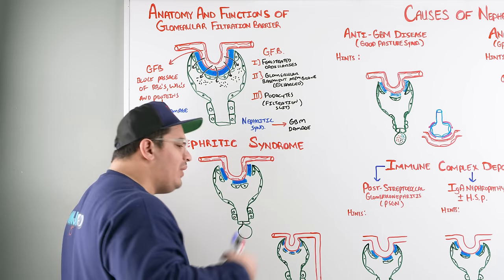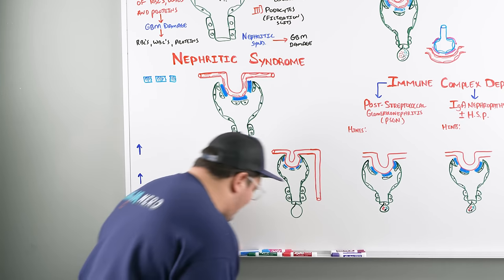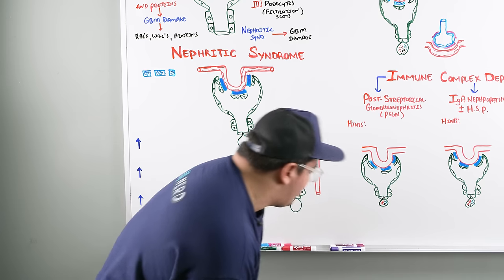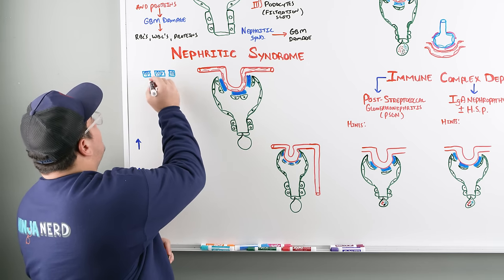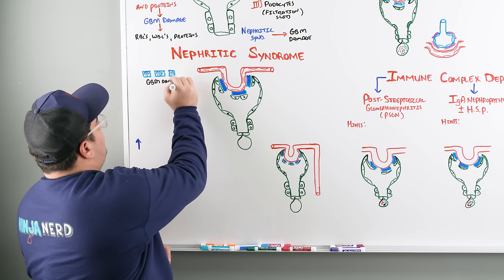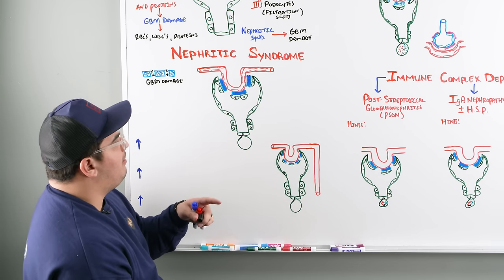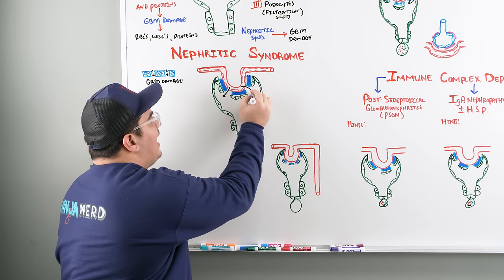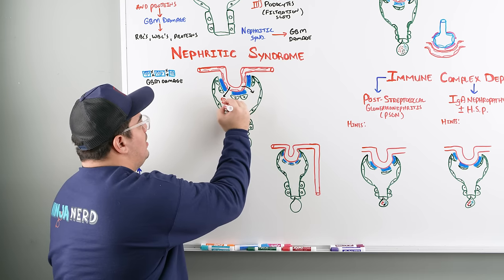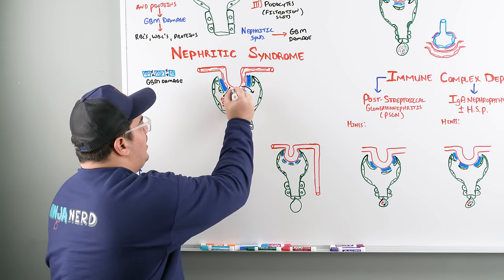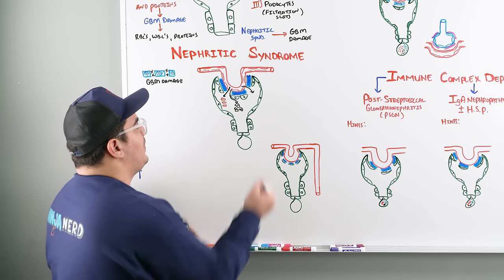When a patient has nephritic syndrome, there is damage to the GBM. When you damage the glomerular basement membrane, you lose the ability to control what leaks out. The things that start leaking out are red blood cells, white blood cells, and proteins.